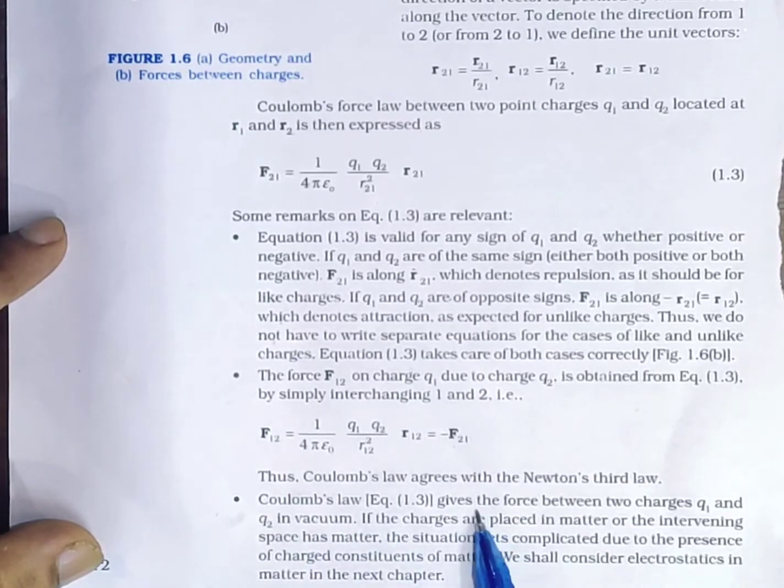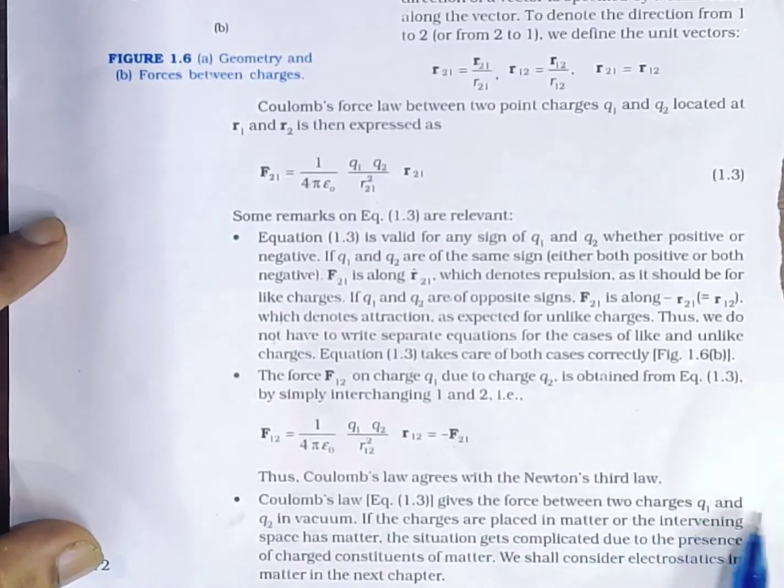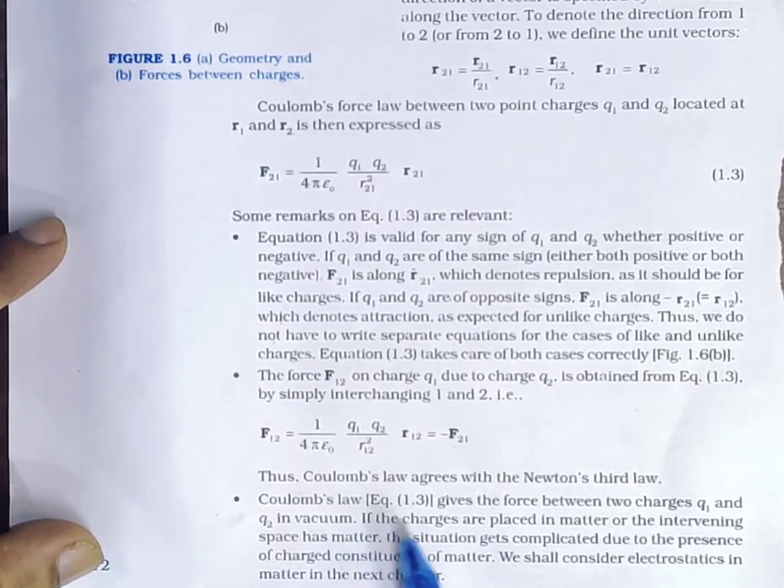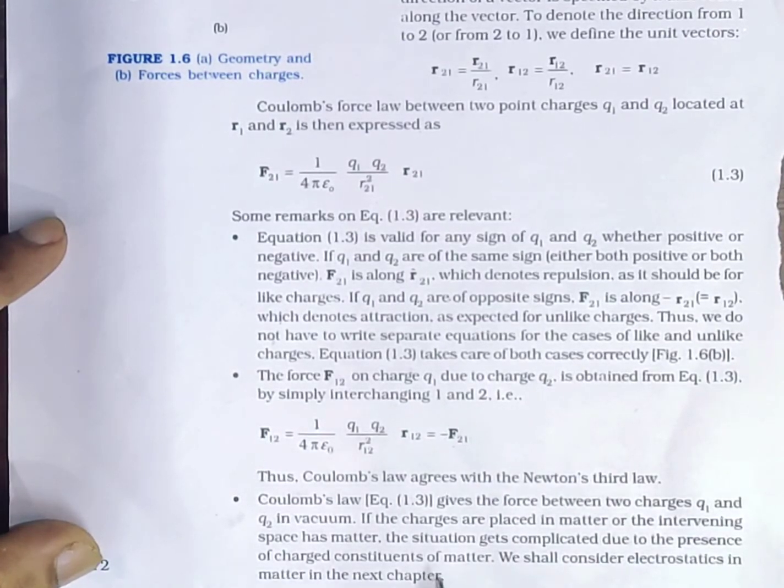Third point: Coulomb's law gives the force between two charges Q1 and Q2 in vacuum. If the charges are placed in matter or the intervening space has matter, the situation gets complicated due to the presence of charged constituents of matter. We shall consider electrostatics in matter in the next chapter.